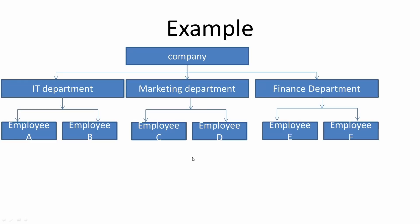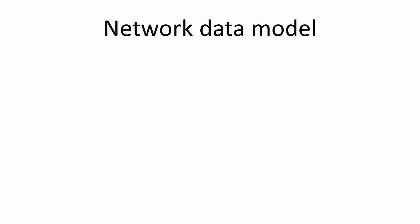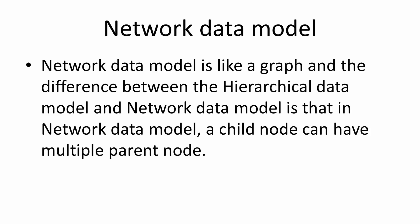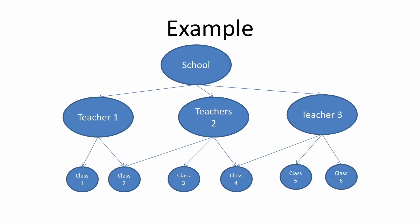The network model is similar to the hierarchical model but with one key difference: in the network model, a child node can have multiple parent nodes. For example, in a primary school with three teachers and six classes, teacher one teaches class one and class two, teacher two teaches class three and class four, but class two is also taught by teacher two, and class four is taught by both teacher two and teacher three. So a child node can have more than one parent node.